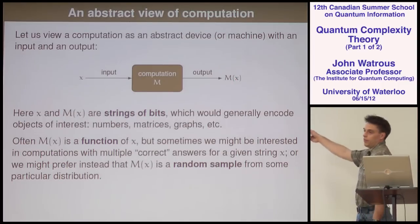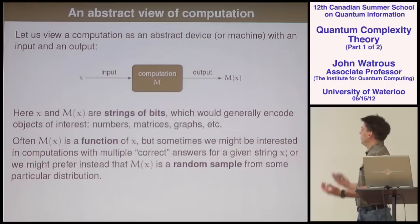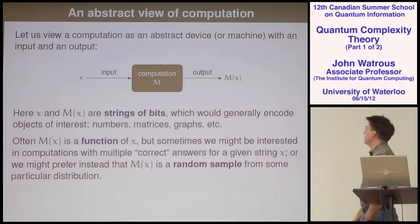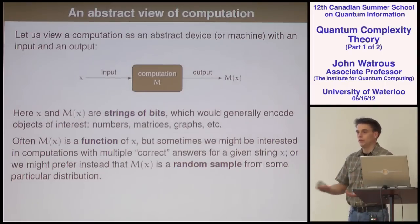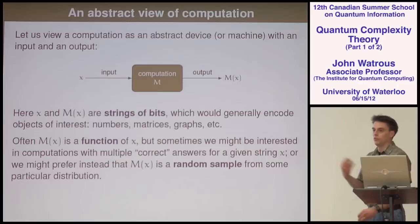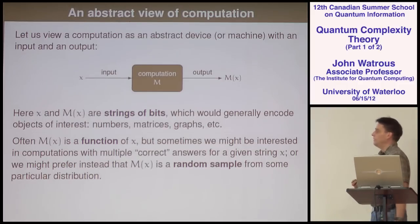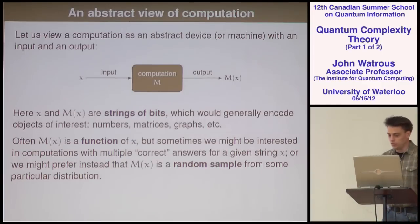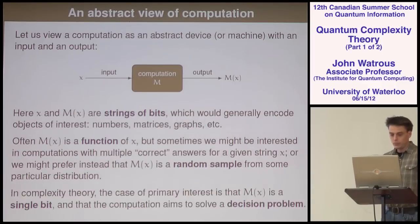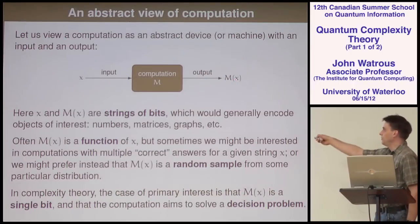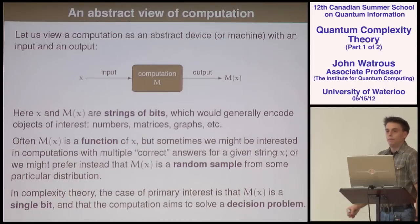This output could be many different things — it could be a function of x describing something interesting like the GCD of two numbers. It might not be a function; it might be a random sample. There are cases where you want to randomly sample from some interesting distribution. But we're mostly going to focus on the case where the output is a single bit, just a zero or a one.